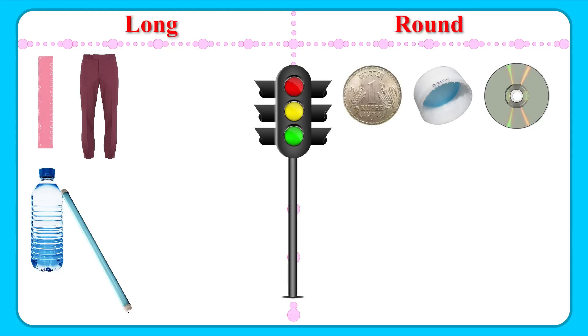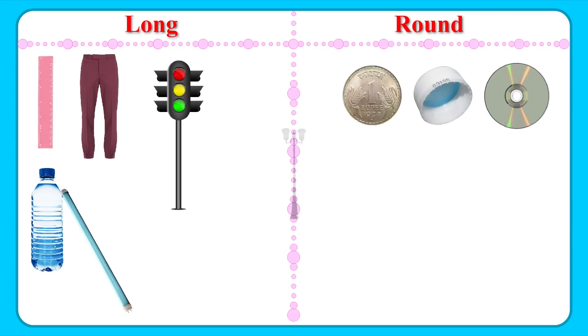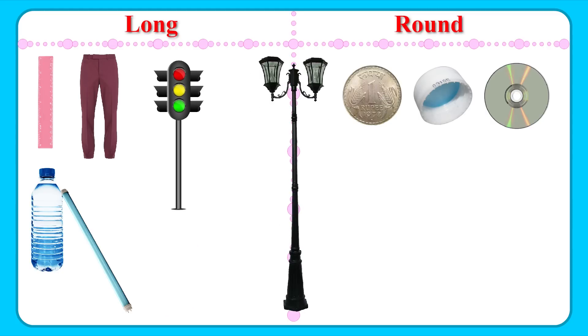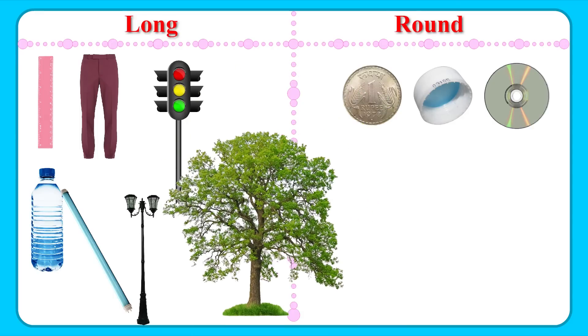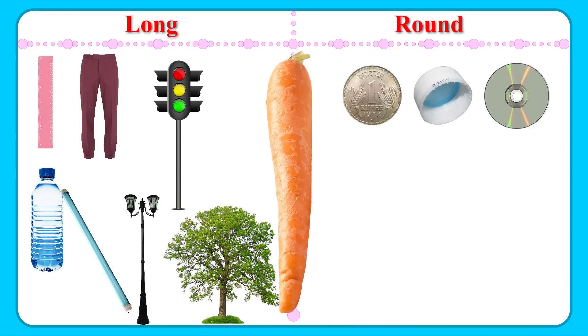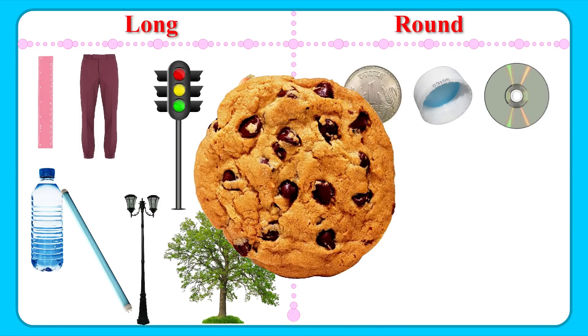Other examples of long objects are traffic signal, lamppost, tree, and carrot. And some of the round objects are cookies,